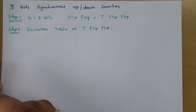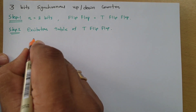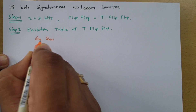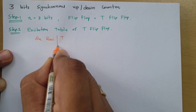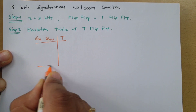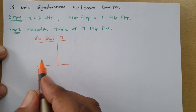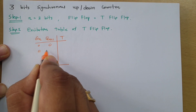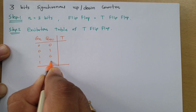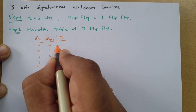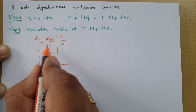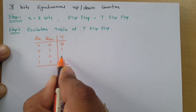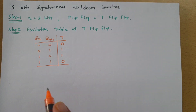In the excitation table, we have the current state Qn and the next state Qn+1, with respect to input T. If T is 0, the current and next state will be the same. If T is 1, the current and next state will be different. That is how one can remember the excitation table of the T flip-flop.